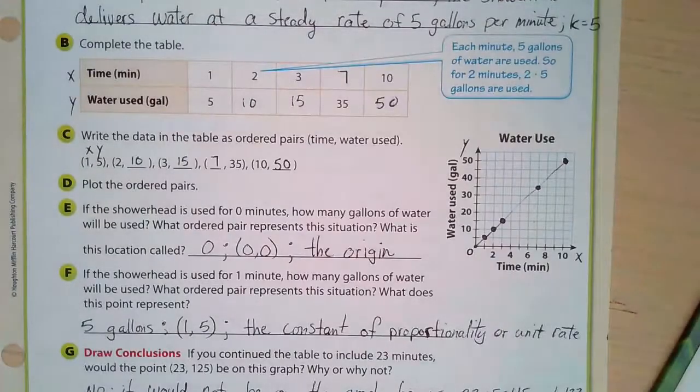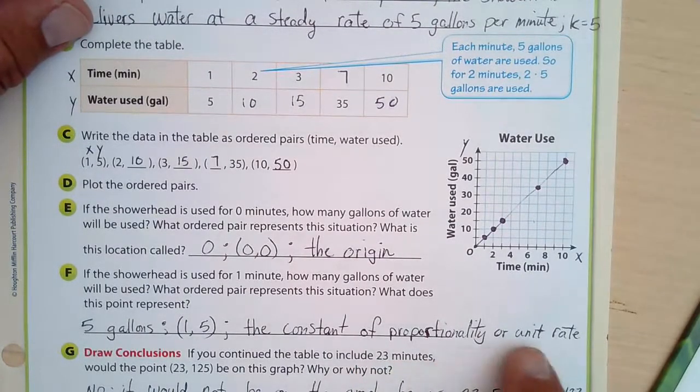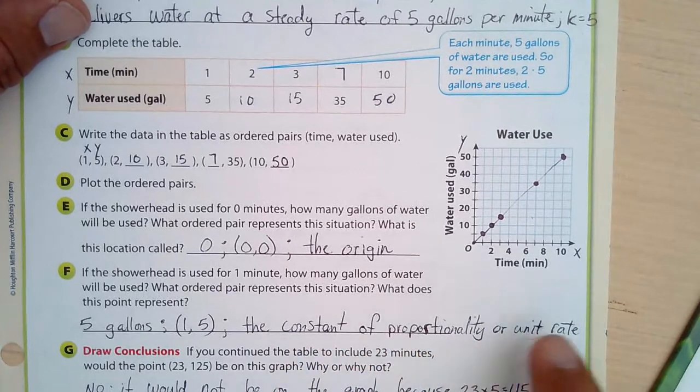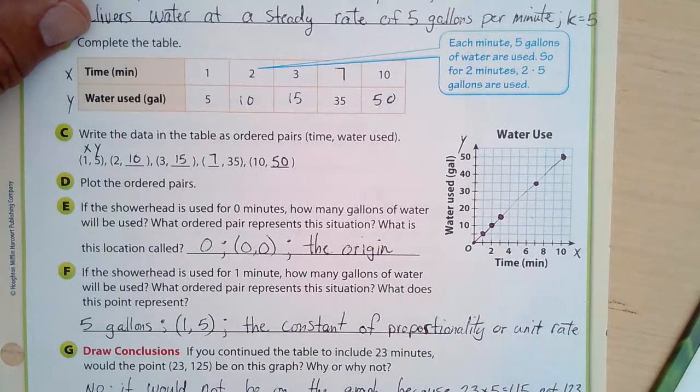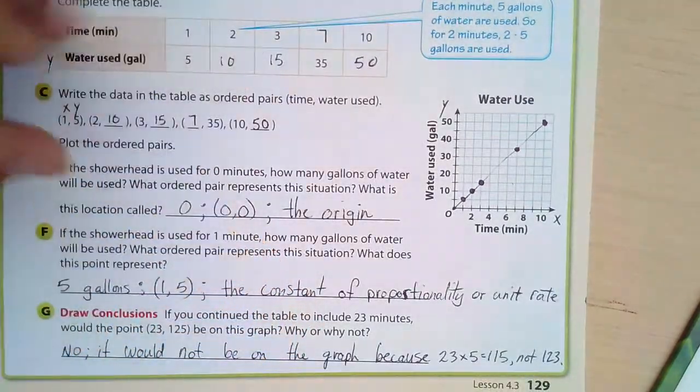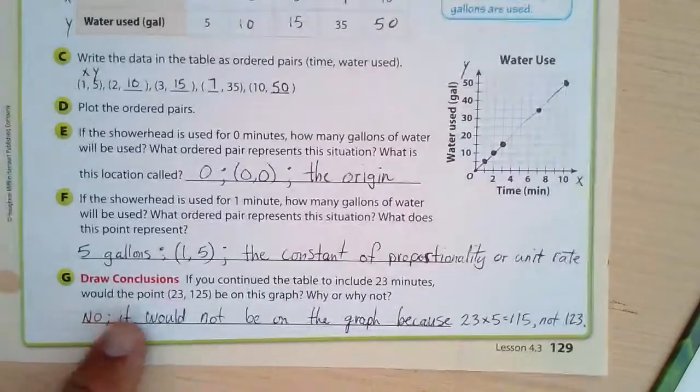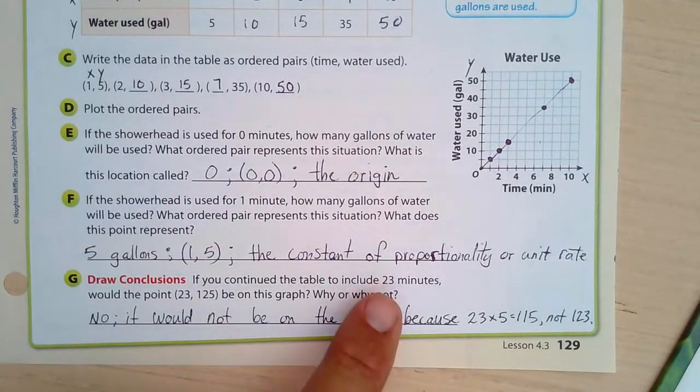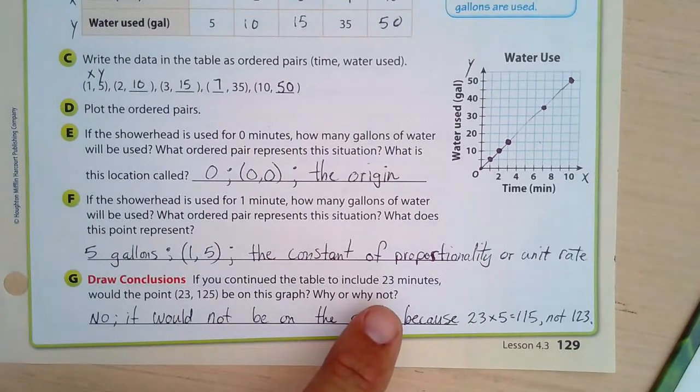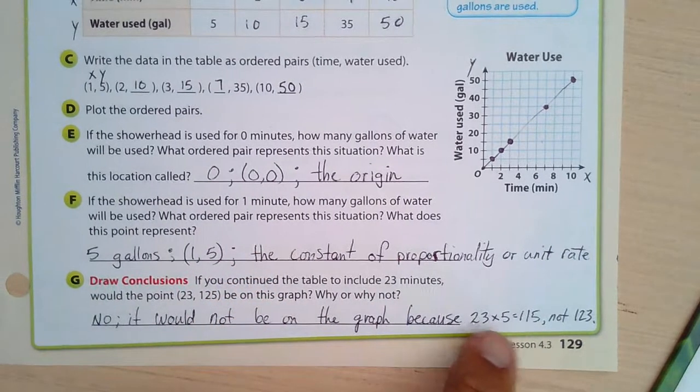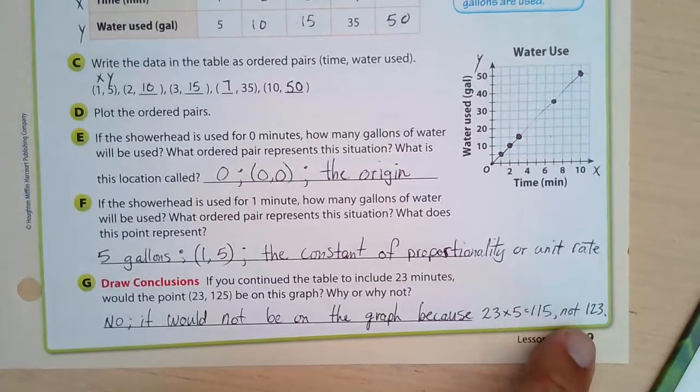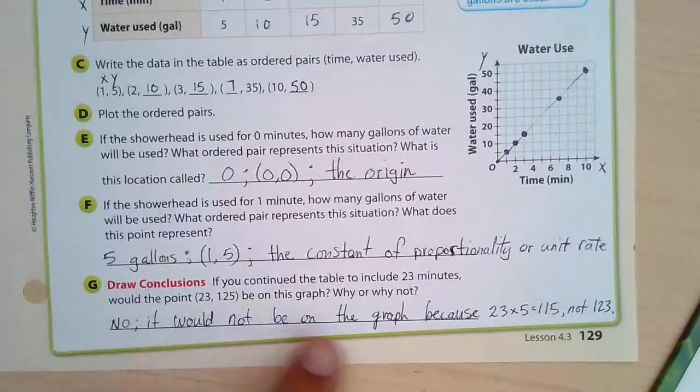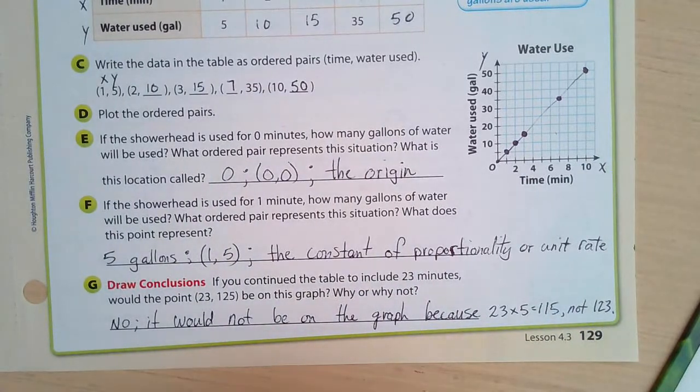So here, the constant of proportionality, or our unit rate, is 5 gallons per minute. If you continue the table to include 23 minutes, would the point 23 and 125 be on this graph? Well, I would take 23 and multiply it by 5 to find out what the y value would be. And 23 times 5 is 115, not 125. So no, it would not be on the graph.